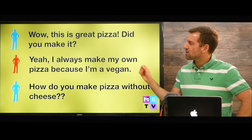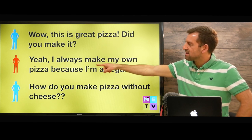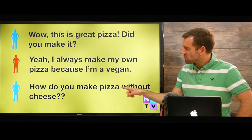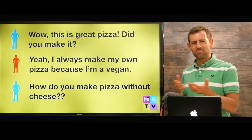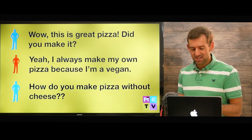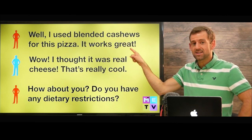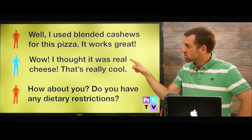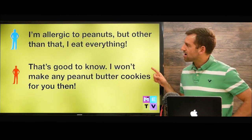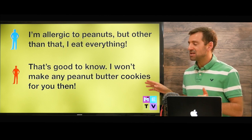Let's look at this conversation. Someone says, 'Wow, this is great pizza. Did you make it?' The reply: 'Yeah, I always make my own pizza because I'm a vegan.' Then: 'How do you make pizza without cheese?' — 'I used blended cashews. It works great.' — 'Wow, I thought it was real cheese. That's really cool. How about you? Do you have any dietary restrictions?' — 'I'm allergic to peanuts, but other than that, I eat everything.' — 'That's good to know. I won't make any peanut butter cookies for you then.'